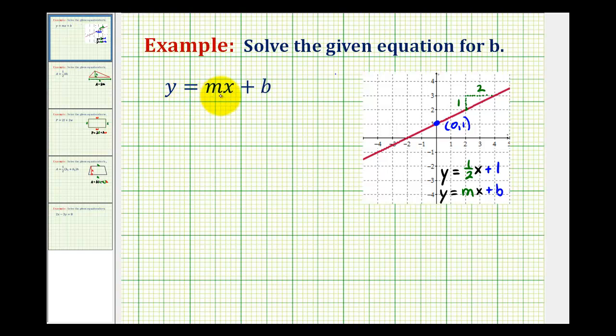Here we're given the equation y equals mx plus b, which happens to be the slope-intercept form of a line as we see on the right. The goal of this problem is to solve for the variable b. So even though y and mx are variables, we'll treat them as constants in order to isolate b.